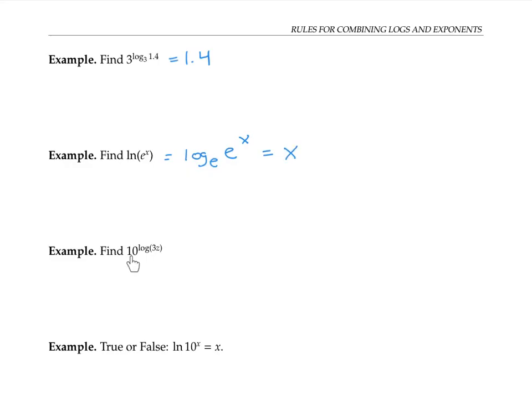If we want to find 10 to the log of 3z, remember that log without a base written implies that the base is 10. So really, we want to take 10 to the log base 10 of 3z. 10 to a power and log base 10 undo each other, so we're left with 3z.